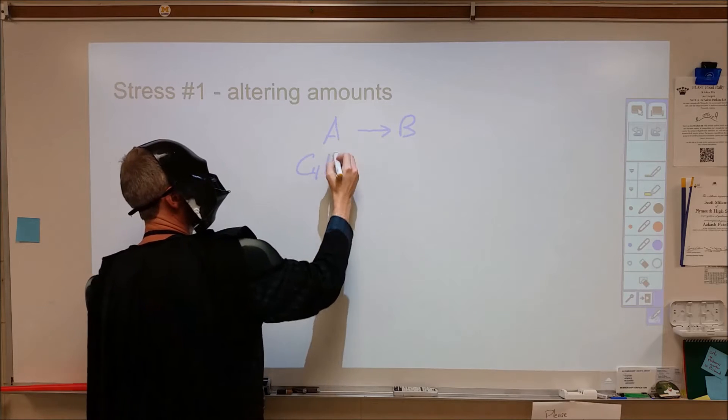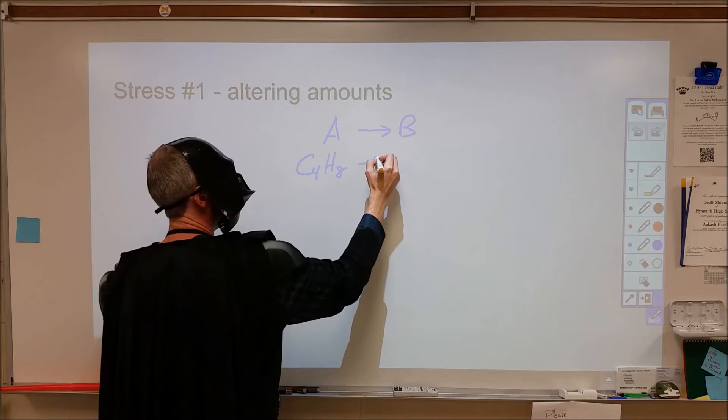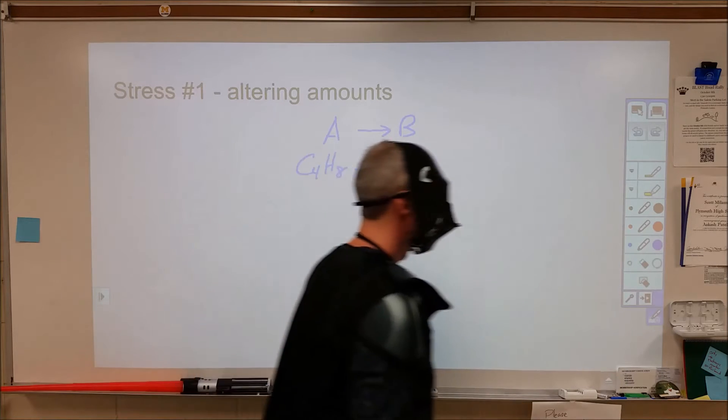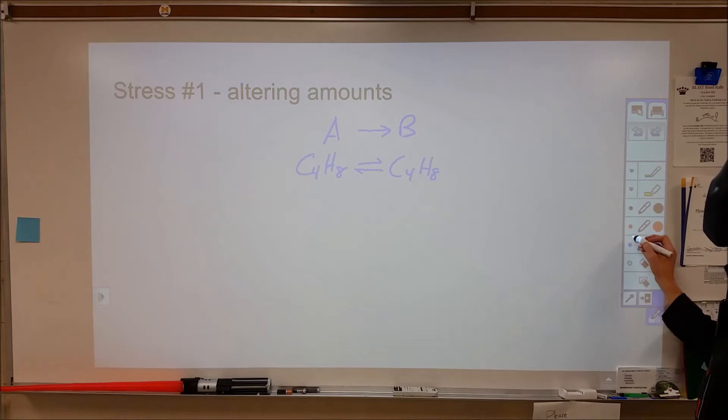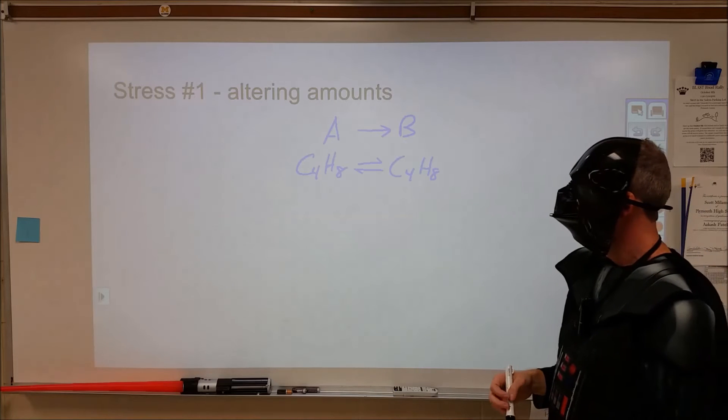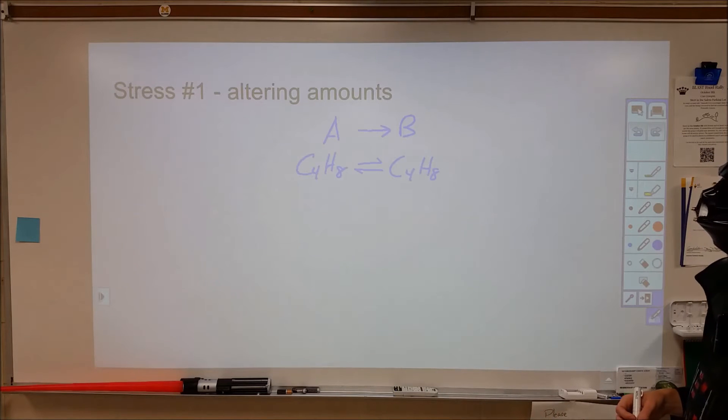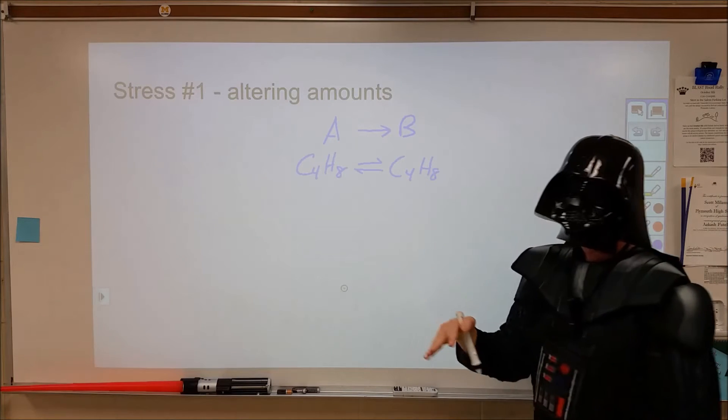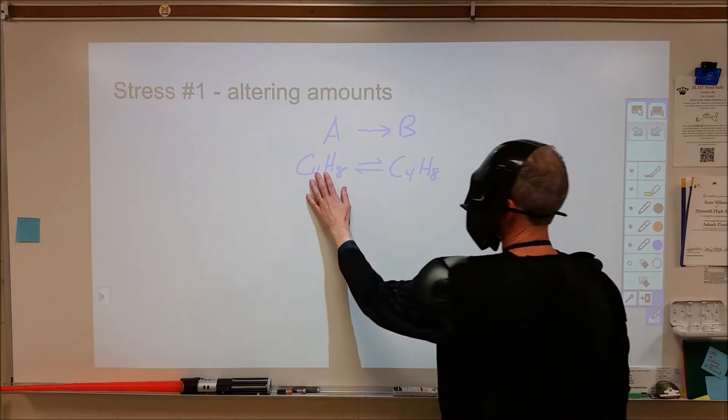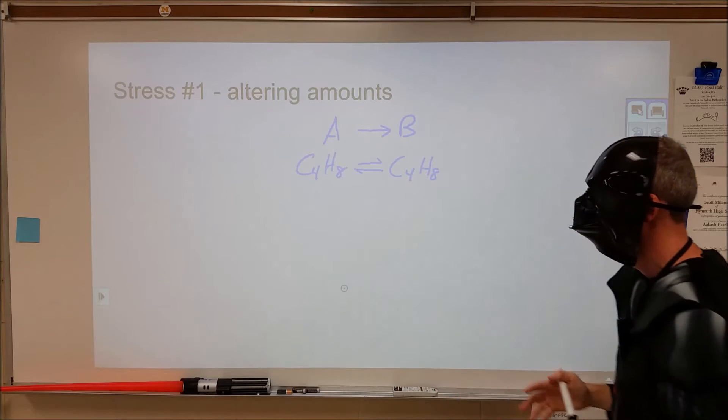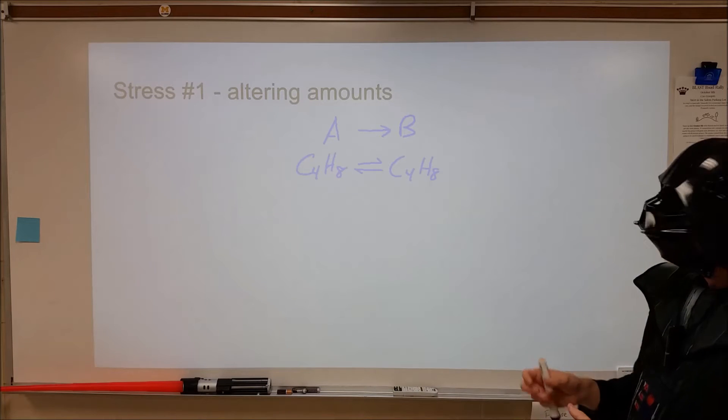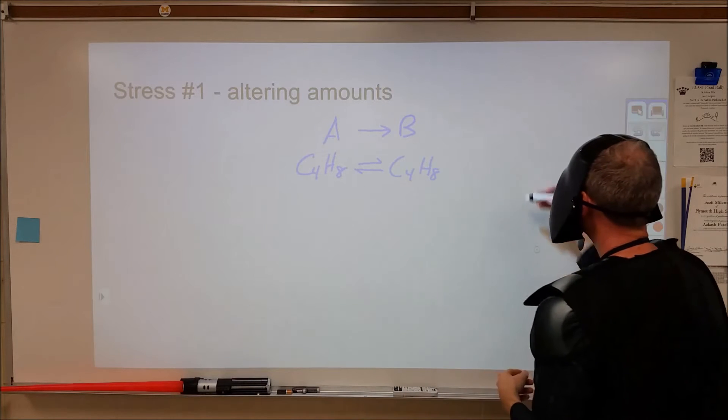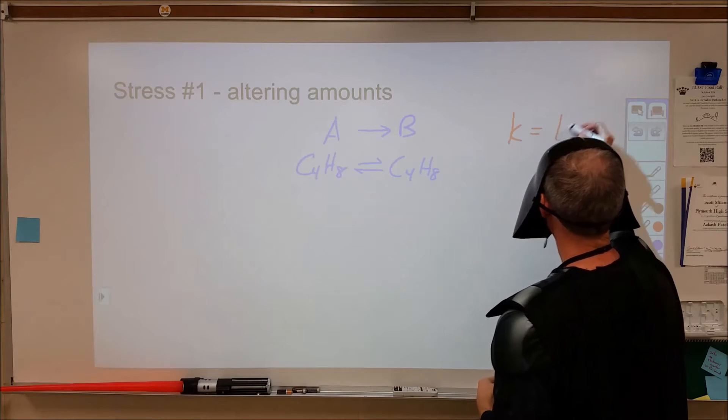An example of that would be if we were to take a cis and trans of some structural isomer here, a diastereomer. A simple example of that could be trans-butylene turning into cis-butylene, two different chemicals that are different in space but otherwise the same. We could set up an equilibrium with that. Let's say, just for simplicity's sake, that our equilibrium constant here is 10.